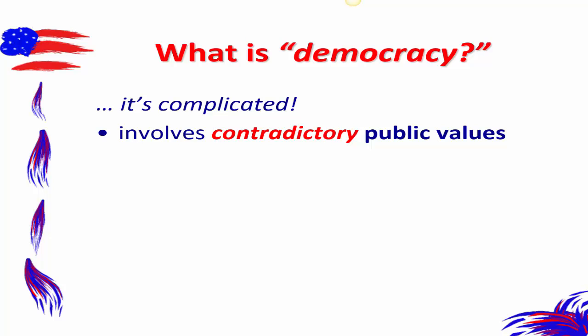The notion of democracy itself involves contradictory public values. The values we assume go along with democracy have internal tensions as well as external tensions between them. Think about freedom — does it mean freedom to do things we want to do? What happens if our choice infringes on somebody else's freedom? Or is it freedom from others' actions or institutions? Then there's equality — does everyone start out the same? Is everyone guaranteed the same outcomes? And what happens when free individual action might impinge on others' equal treatment?